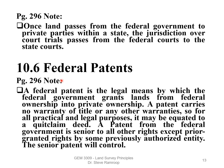Federal Patents, Section 10.6, page 291. A federal patent is the legal means by which the federal government grants land from federal ownership into private ownership. A patent carries no warranty of title or any other warranties, so for all practical and legal purposes it may be equated to a quitclaim deed. A patent from the federal government is senior in all rights — however wrong or incorrect in terms of the description, it has senior rights, except for prior granting rights by some previously authorized entity.